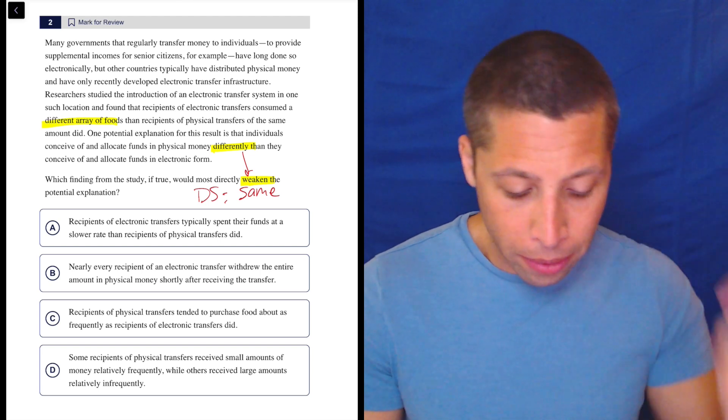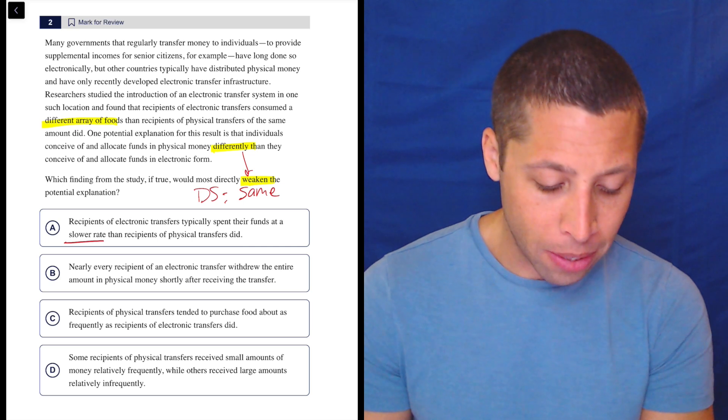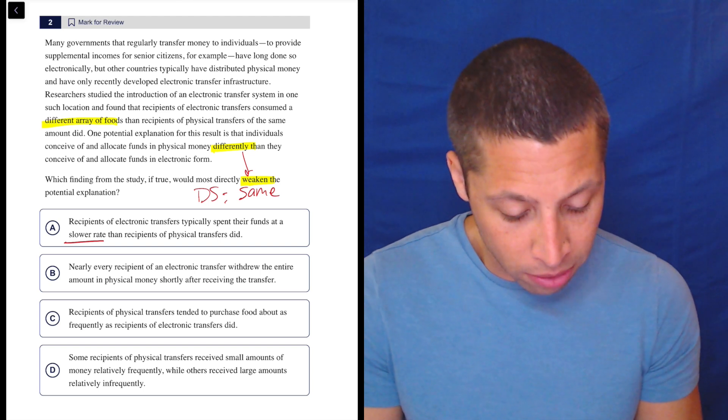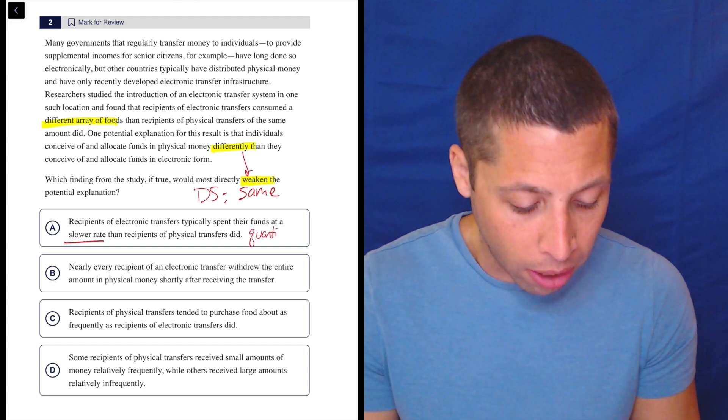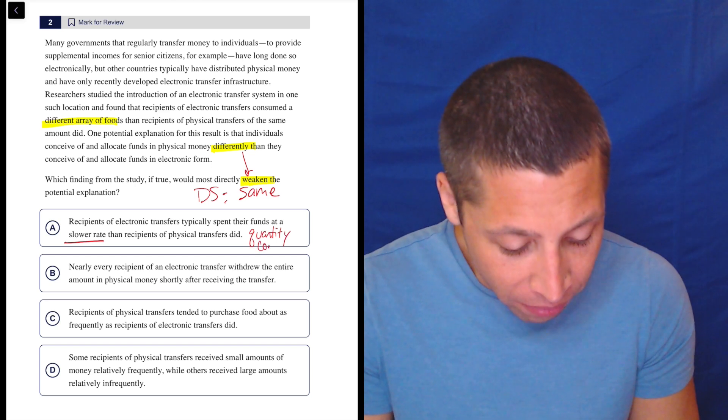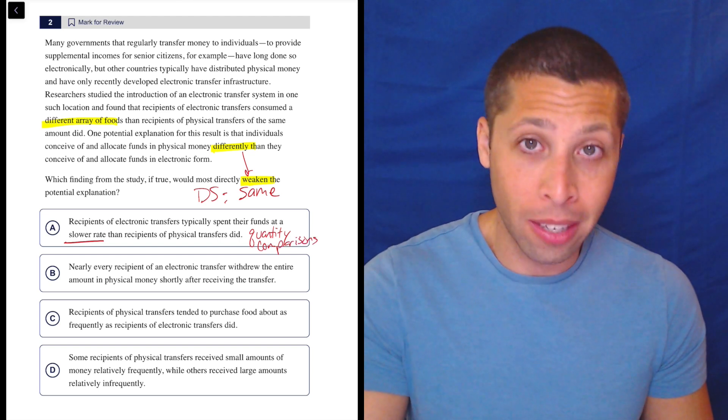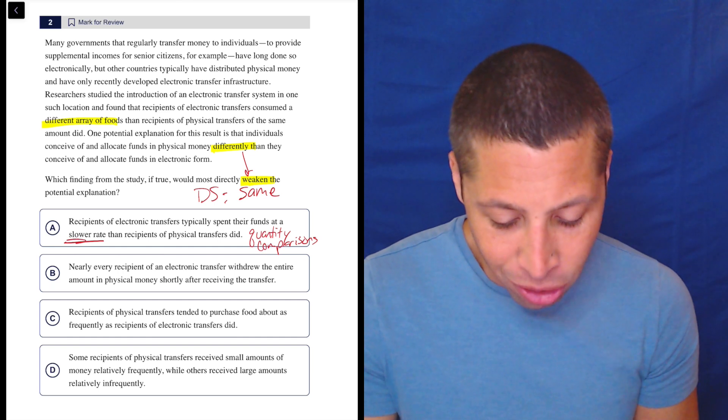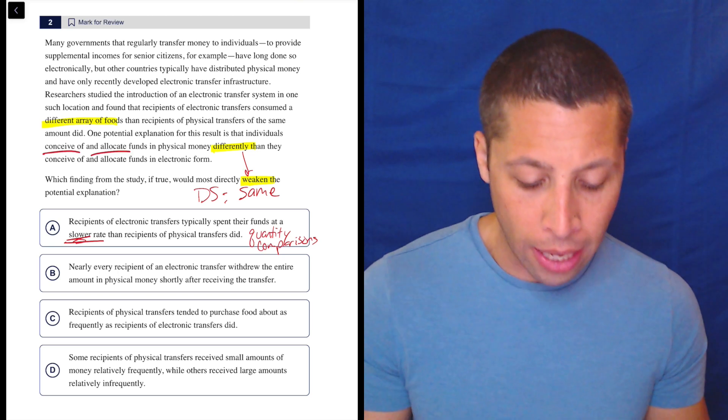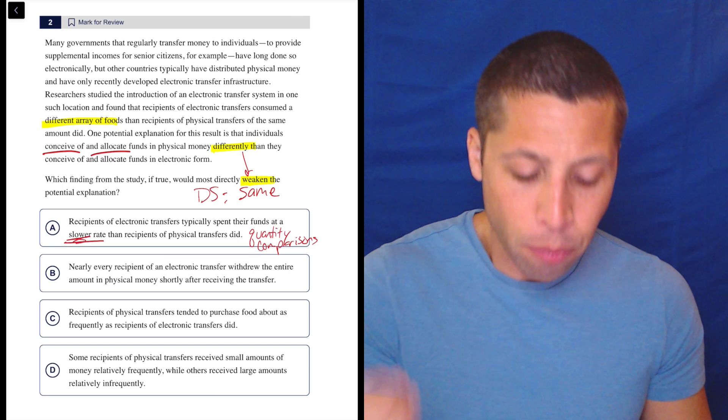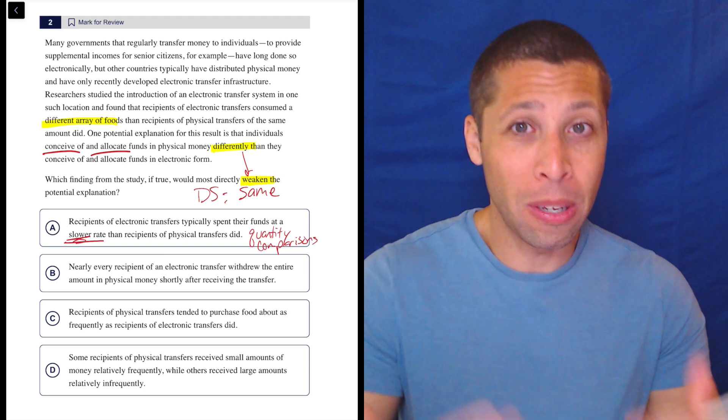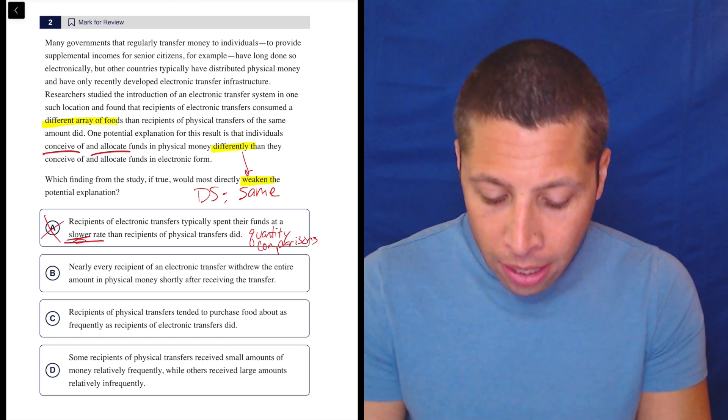So A, recipients of electronic transfers typically spent their funds at a slower rate than recipients of physical transfers did. Well, that sounds like it actually is a difference. So this sounds like a difference to me. It's a difference of maybe a quantity. So we've got our typical trap answer reasons. It's a quantifier. It's a bit of a comparison, though. Comparisons aren't so bad here. We seem to be making one in the passage. So making one here ain't so bad. And then I just don't remember them talking about the rate, though. They're buying different foods. They're thinking of money, conceiving of and allocating funds differently. But the rate of it doesn't really seem to come into this. But again, we want to say that they're the same. So if they said they were doing it at the same rate, okay, maybe that's better. But this seems to be supporting the conclusion, not weakening it, not undermining it. So we can get rid of that.